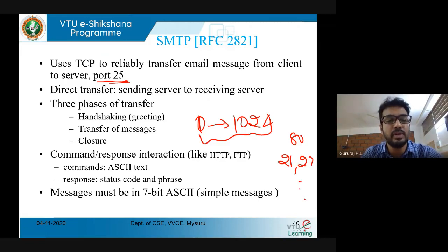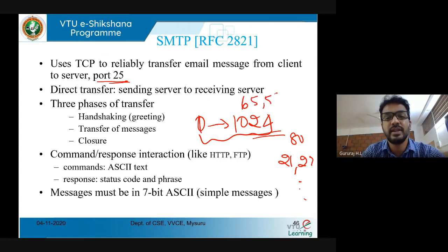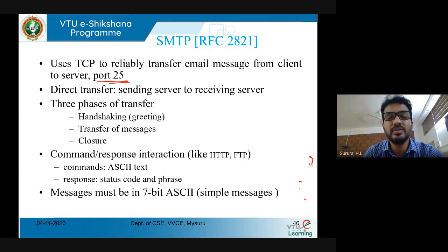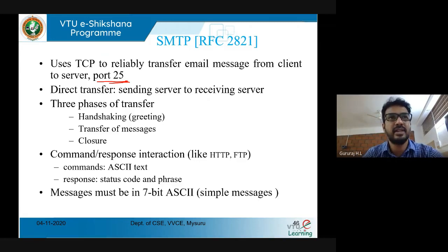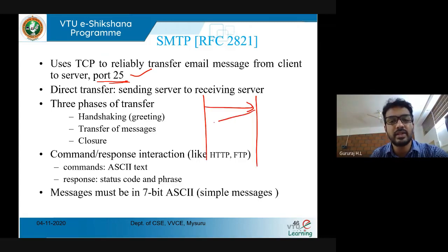If you want to use a port number for your own communication, you must use port numbers above 1024; using one within 1024 gives an error that the port is already used by default protocols. The maximum port number you can use is 65535. TCP mainly works with three important stages: handshaking, transfer of messages, and closure. This is why TCP is called a reliable protocol — every packet sent gets an acknowledgement.